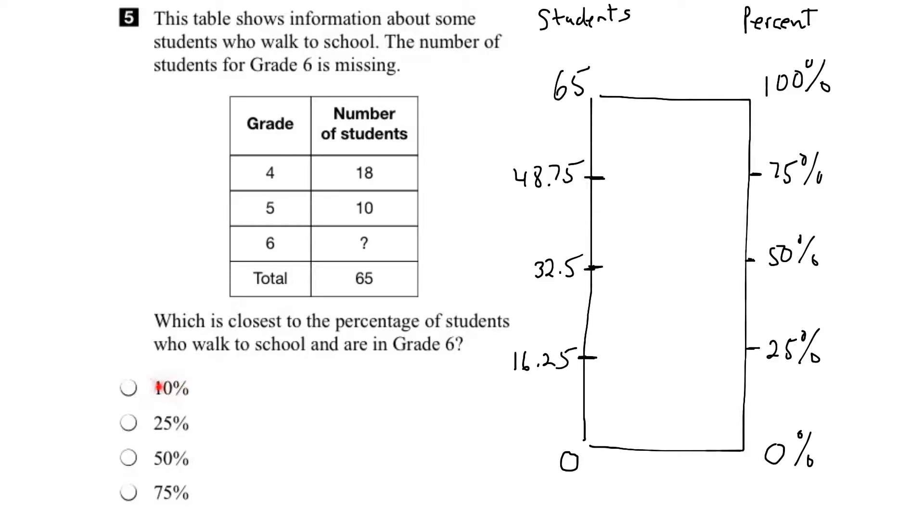So what about 10%? Well that means to break this number line for percentage into 10 equal parts. So 10% would be right here. So 10% means 10 out of 100 or to divide the total amount by 10. And if we did that, we'd see this would be 6.5. So that would be 10% right there.